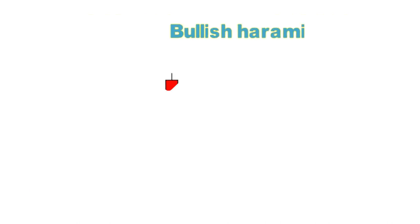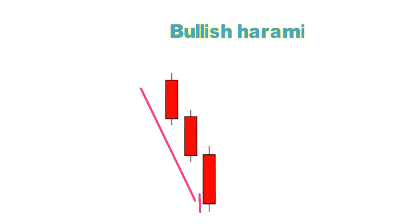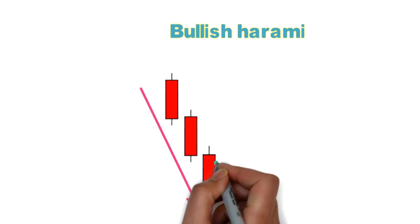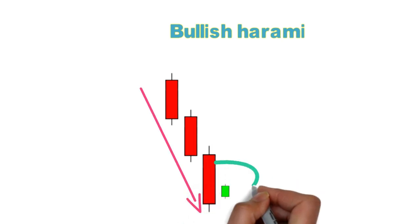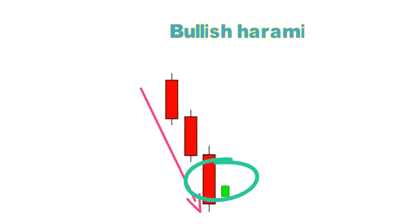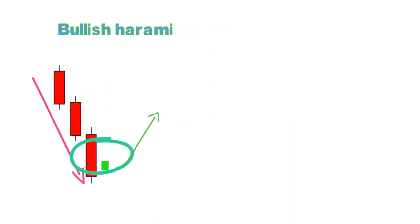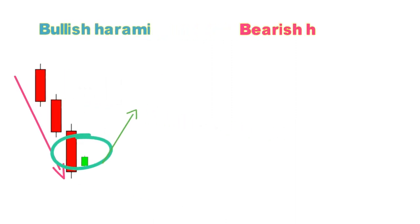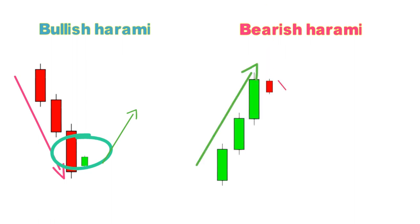The next candlestick is Bullish Harami. In Japanese, 'harami' means pregnant lady. In a downtrend, this candlestick forms like a small baby inside a long bearish candle — it indicates bears have lost control. For every pattern there is a reversal pattern, so the opposite of Bullish Harami is Bearish Harami. Small bodies need confirmation — this is a very important thumb rule.